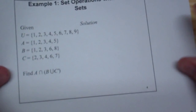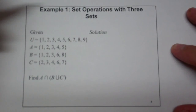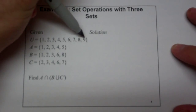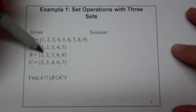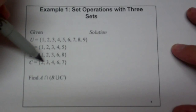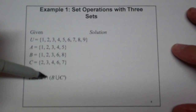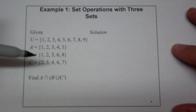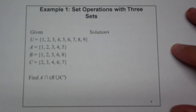Here's our first example with the set operations. We've got the universal set of digits 1 through 9, and then A has five elements in it, B has five elements in it, and C has five elements in it. We'd like to find A intersection, in parentheses, B union C complement. The solution requires that we find C complement first.